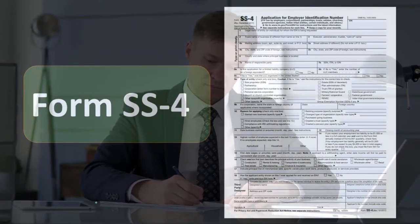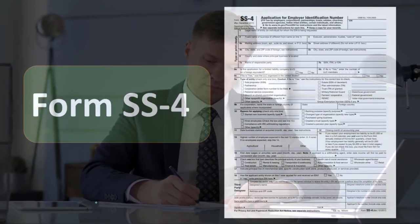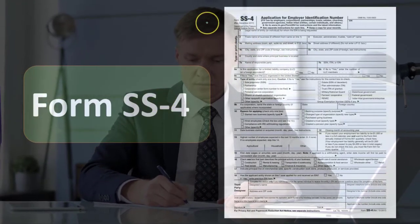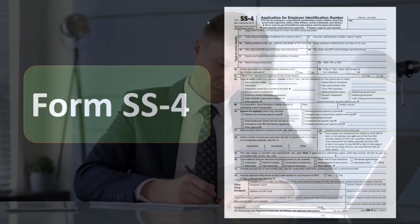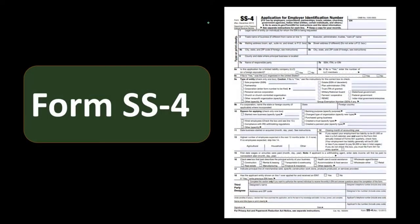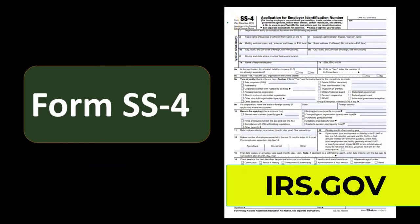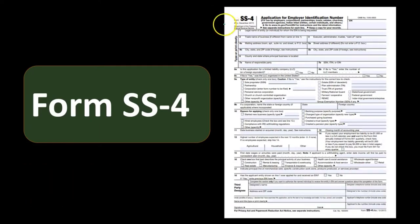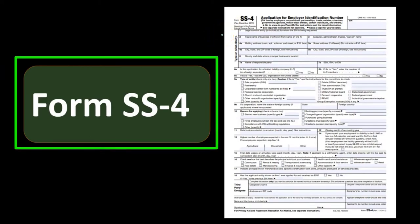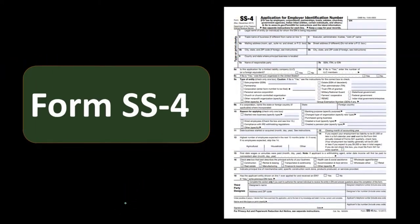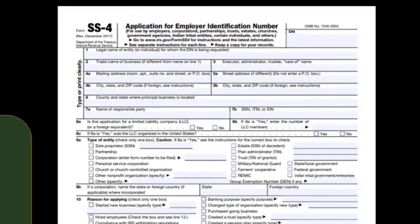The process for applying for the SS-4 is fairly straightforward. You can do it online at irs.gov. Go to Forms, find the SS-4, and go through the steps. It is a one-page form that is pretty quick to fill out and get going.